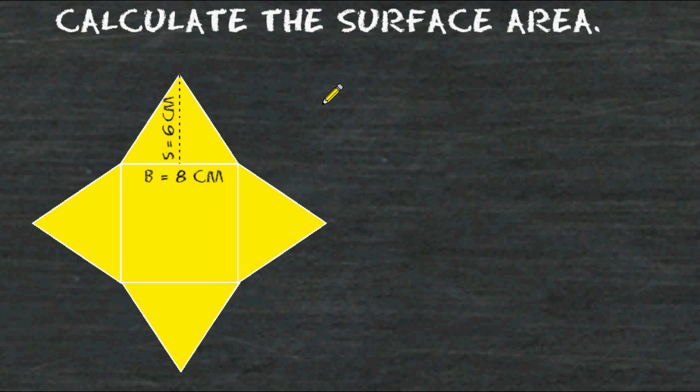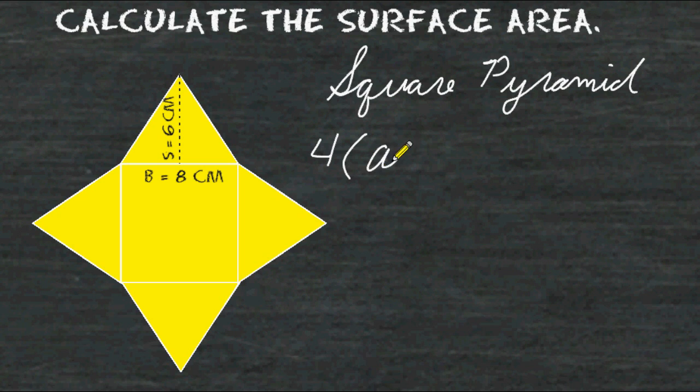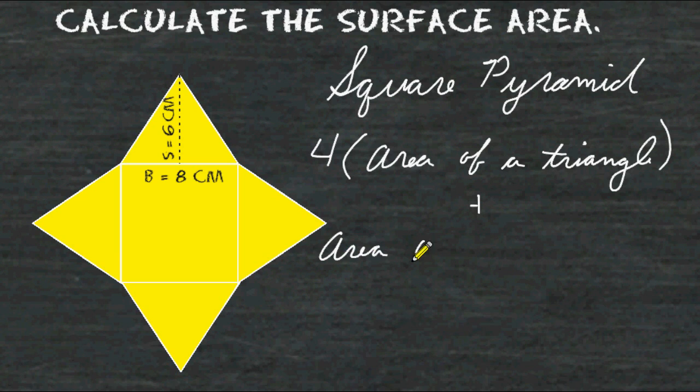So let's say you forget the formula for calculating the surface area of a square pyramid. What you can do is just calculate the area of one of the triangles and then multiply the area by four because they are congruent, then find the area of the square base and add those two results together.